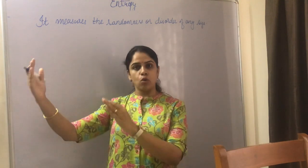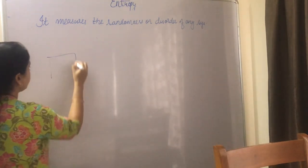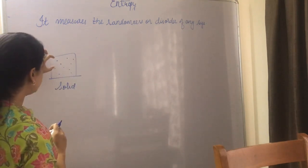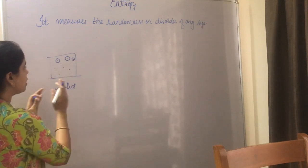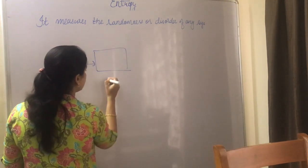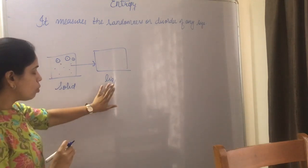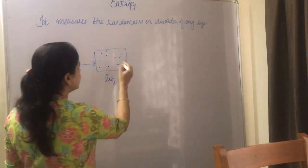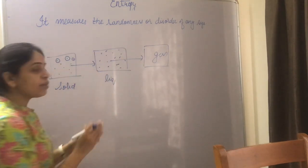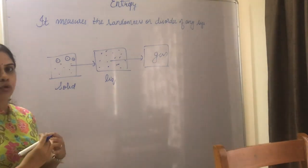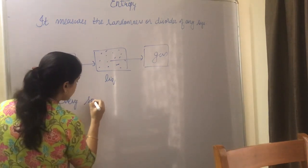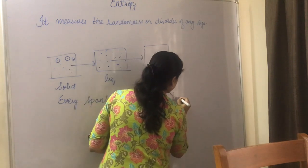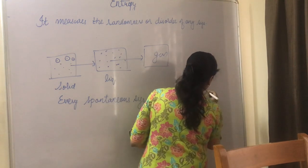Every system tries to go to higher disorder. For example, in a solid substance, every particle or atom has a fixed position — they are in a more ordered form. The solid tries to go into the liquid phase where the molecules or particles are in disorder with more randomness, and then further tries to go into the gas phase. So every spontaneous system always moves towards higher disorder.